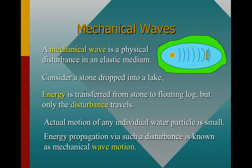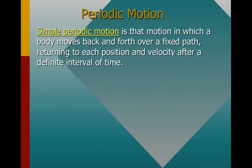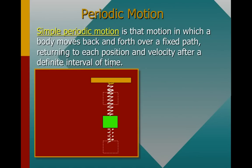Remember, we're talking about elastic media, which is the plural of medium. If we're talking about an elastic medium, then we're talking about something that's fairly similar to a spring. So we should review this idea of periodic motion. When we talk about simple periodic motion, we talk about a motion in which the body moves back and forth over a fixed path, returning to each location and each velocity after some definite amount of time.